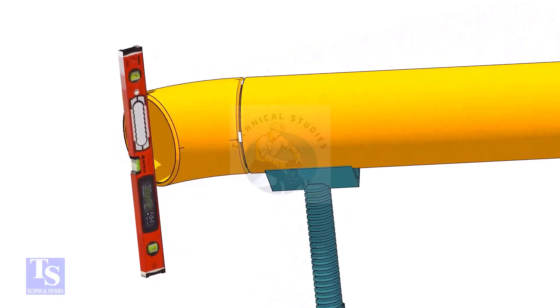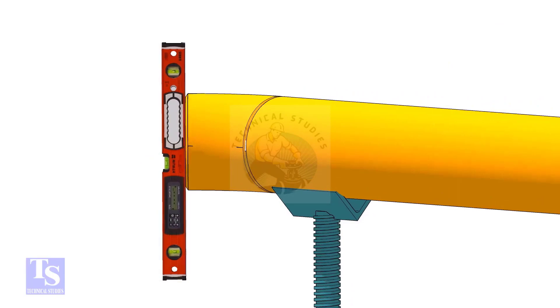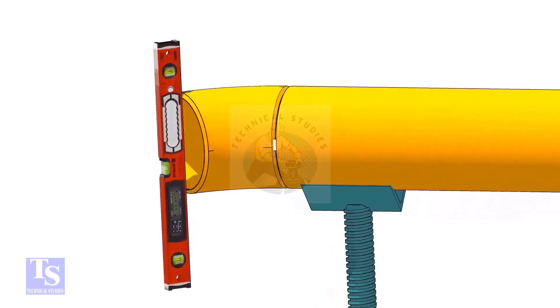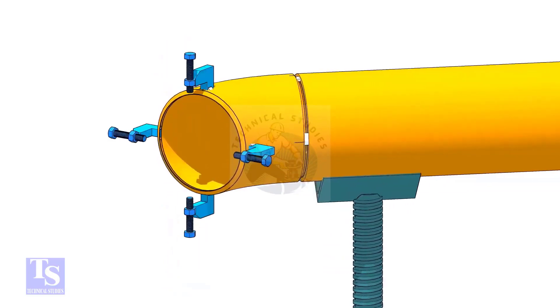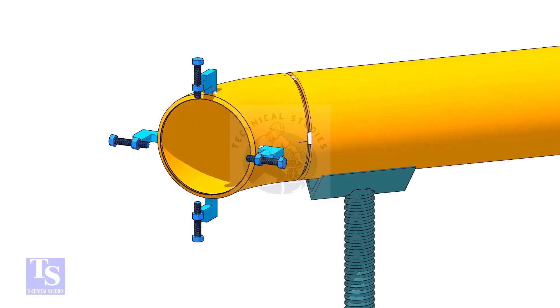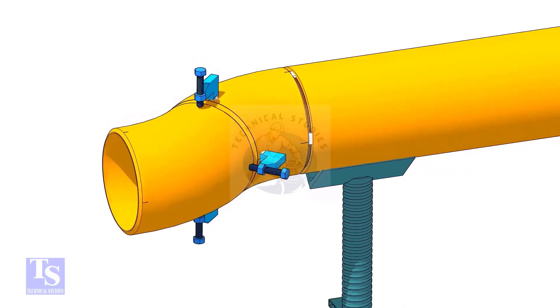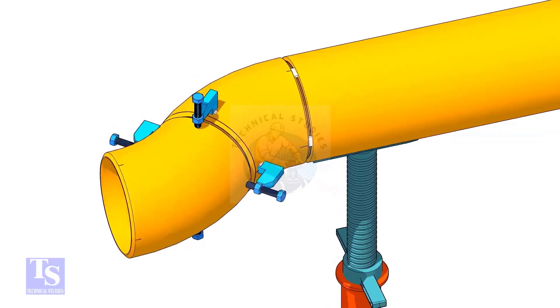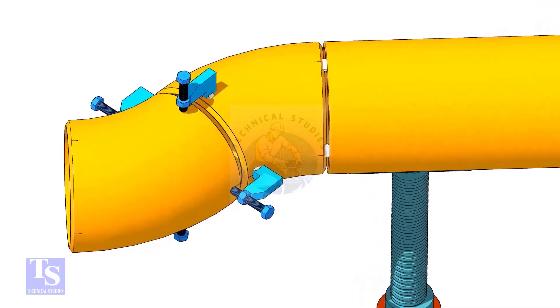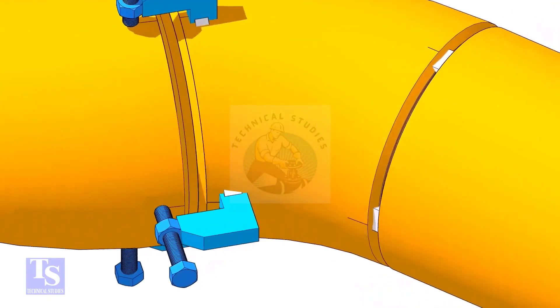Level the elbow face through the center marks. Tack weld four jack bolts as shown. Put the other elbow in the jack bolts and match the center lines of both elbows. Put the gap rod between the elbows and maintain the required gap.